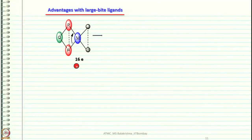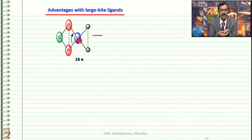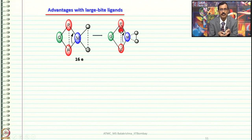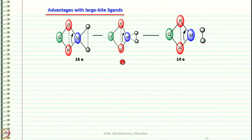The graphics illustrate the advantage of large bite angle ligands. This is a 16-electron species where the metal is in a +2 oxidation state — a d8 system. If you focus on the separation between the two groups ready for reductive elimination — when you increase the bite angle, they come closer together and facilitate the concerted elimination, making reductive elimination much more facile. After reductive elimination, it becomes a 14-electron species ready for the next cycle of catalysis.